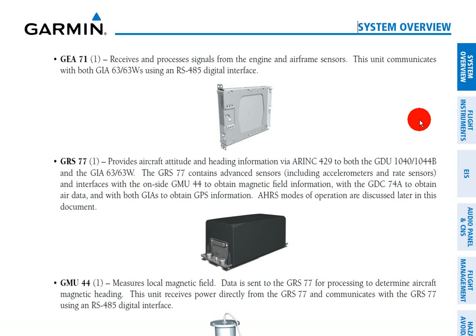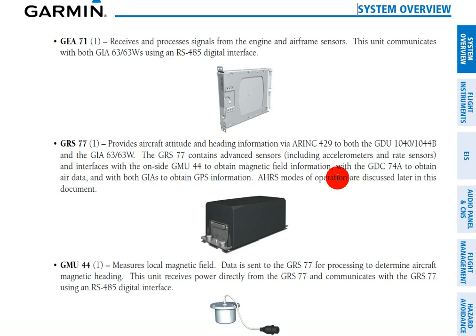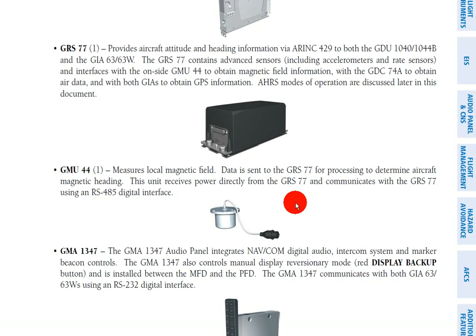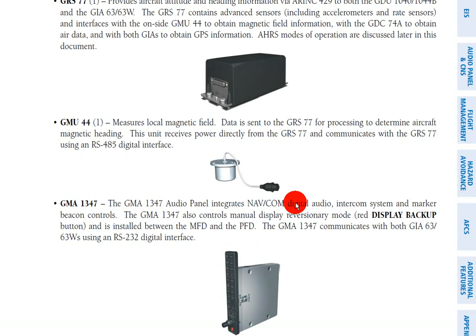Next we have the AHARS — attitude and heading reference information — which is provided by the GRS 77 using accelerometers and rate sensors. On top of that, we need to know the aircraft's heading, so we get that from the GMU-44, which is essentially a magnetometer.